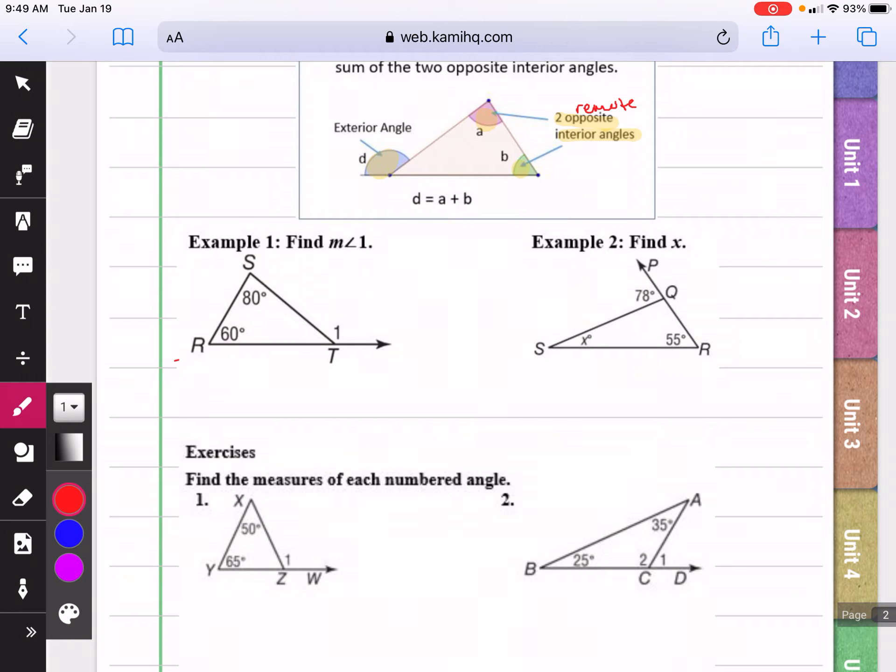So in example one, we want to find the measure of angle one. We know that it's going to be the sum of these two angles. So if we add 60 and 80, we get 140. So the measure of angle one is 140 degrees.